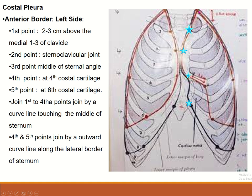On the left side: first point two to three centimeters above the middle one-third of the clavicle, second point at the sternoclavicular joint, third point at the middle of the sternal angle, fourth point at the fourth costal cartilage, fifth point at the sixth costal cartilage. Join the first to fourth points by a curved line touching the middle of the sternum, and the fourth to fifth points by an outward curved line along the lateral border of the sternum.